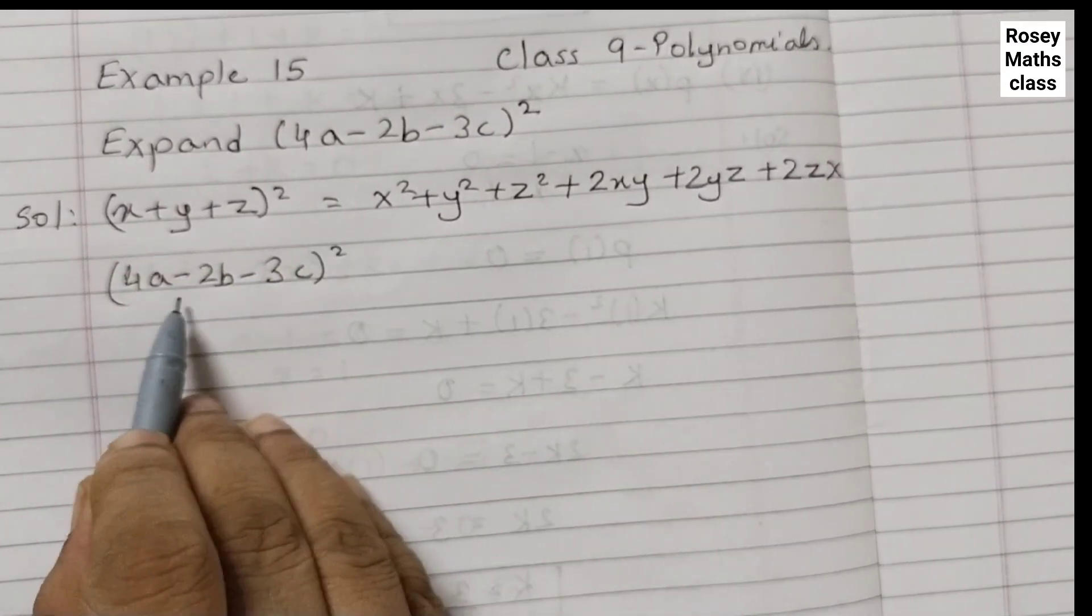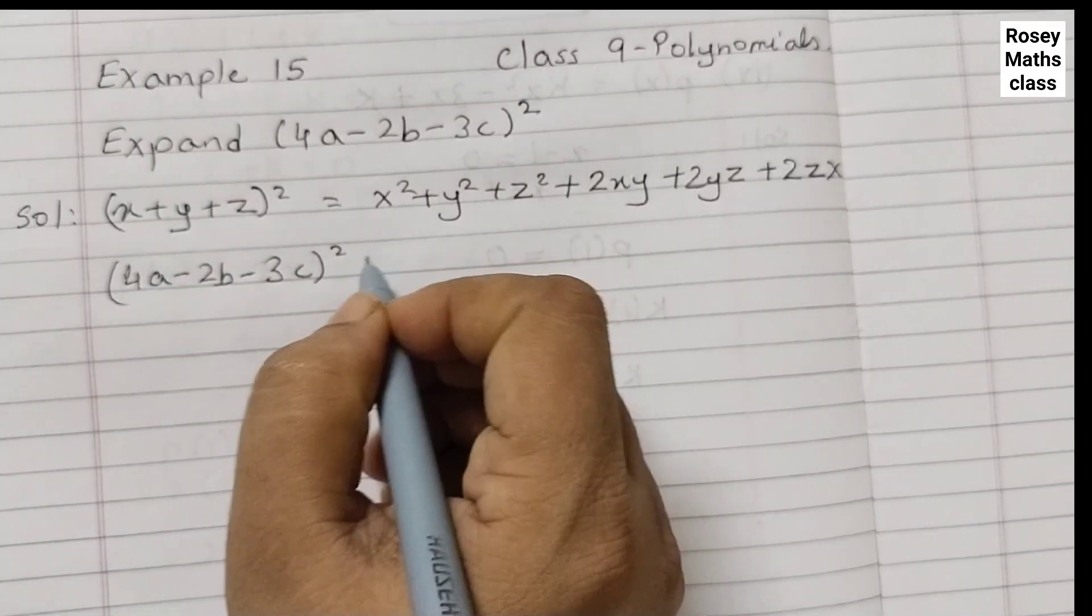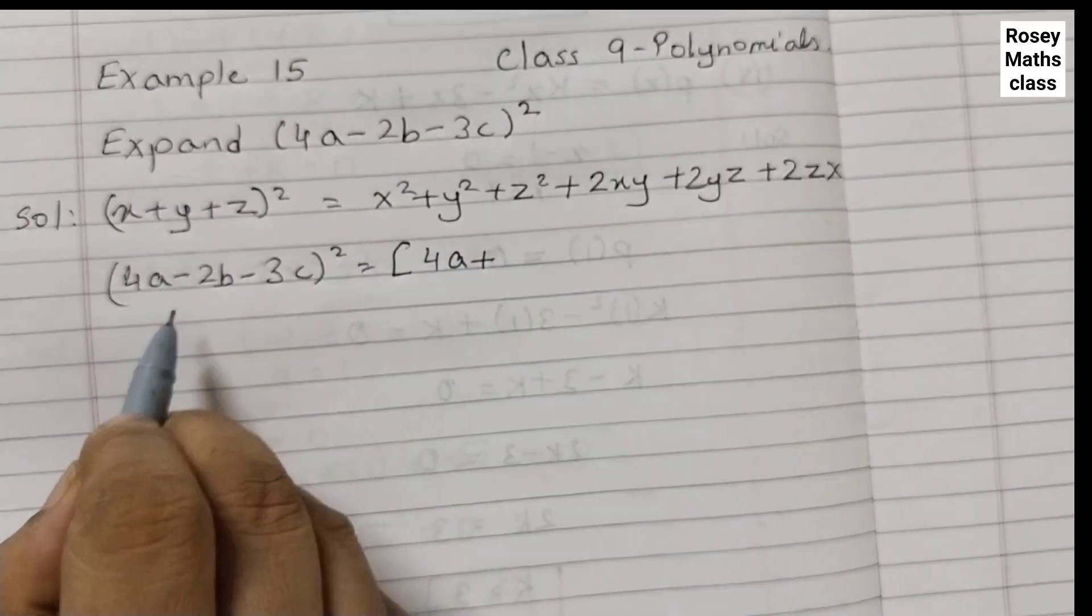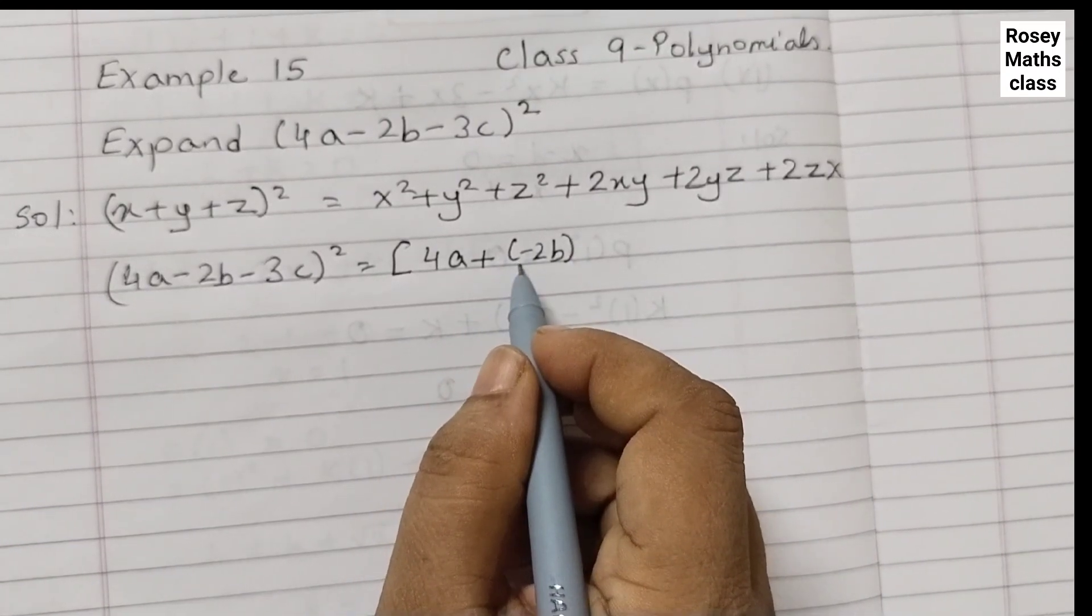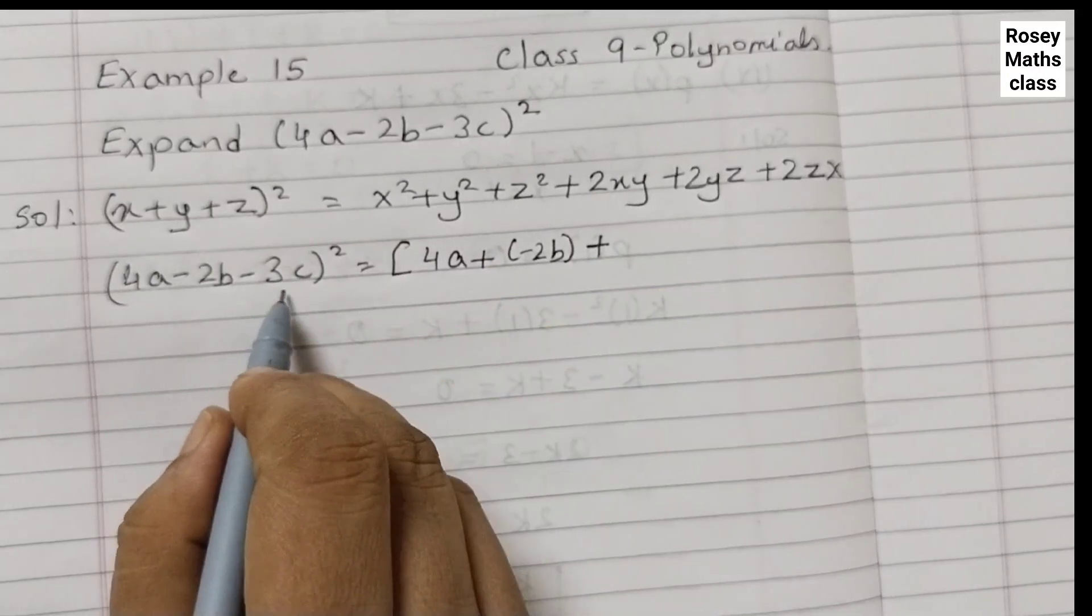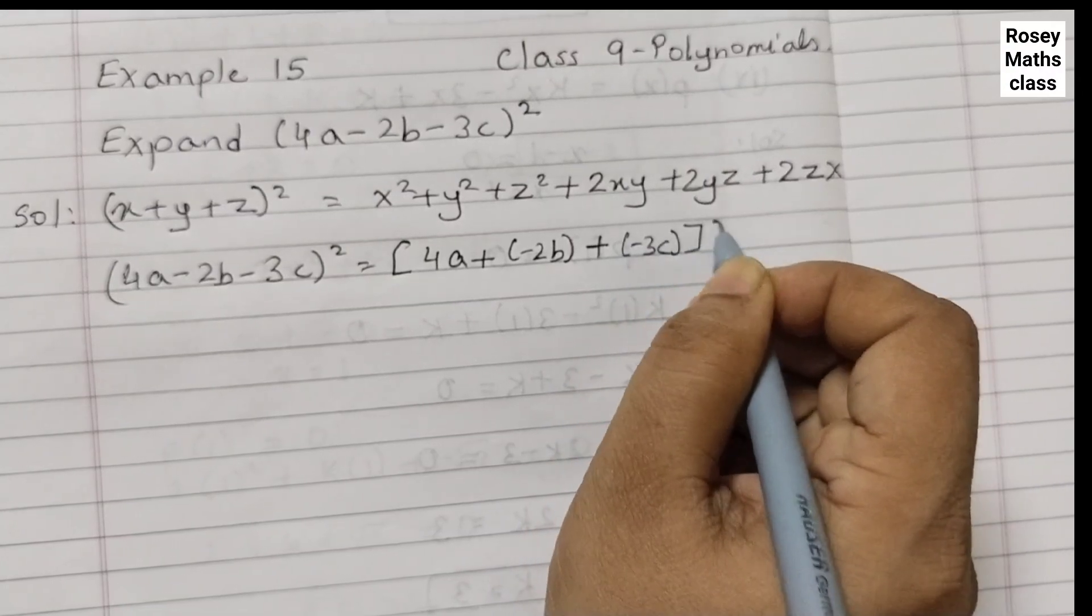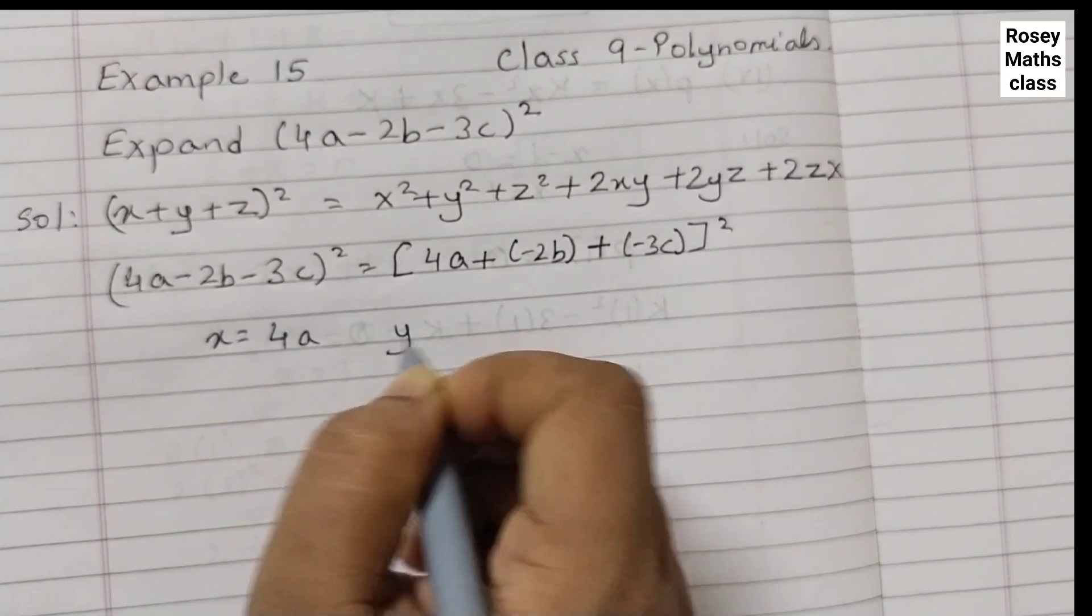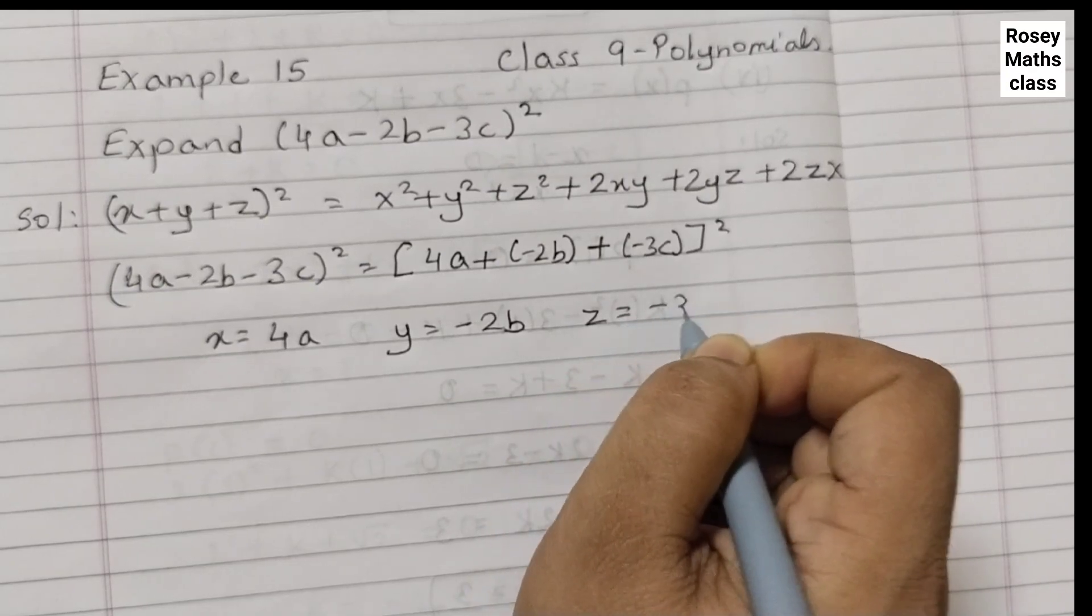There is no identity for minus sign so we need to rewrite this in this form. Put a big bracket 4a plus minus 2b. Plus into minus is minus so we can write this as plus minus 2b plus minus 3c, the whole squared. X is equal to 4a, y is equal to minus 2b and z is equal to minus 3c.